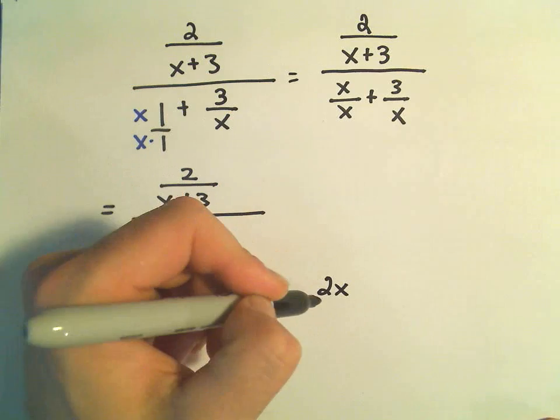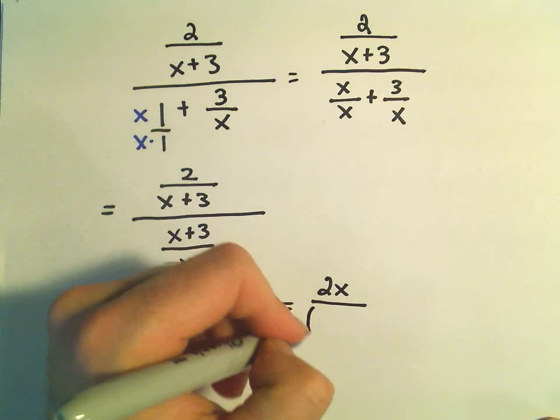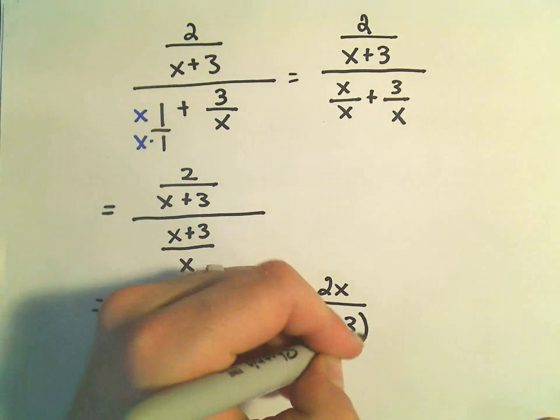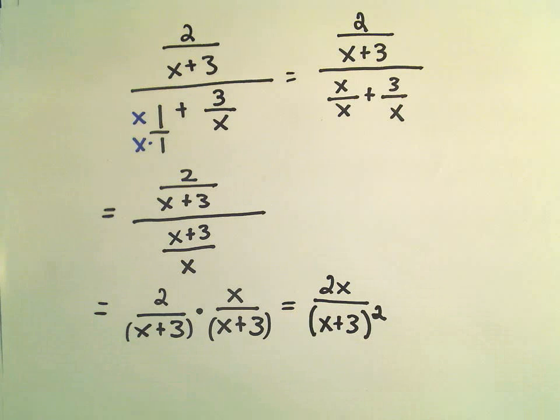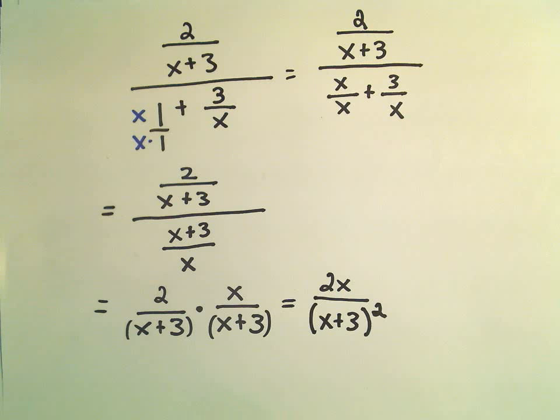I would probably rewrite this simply as 2x, and then x plus 3 quantity squared. Again, you could multiply the denominator out. You could FOIL it out, x squared plus 6x plus 9. But I think my own personal preference would just be to leave it in this nice factored form.